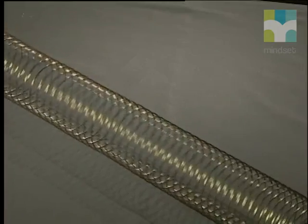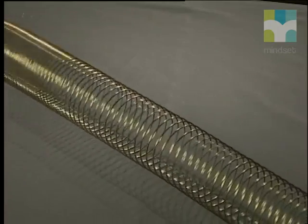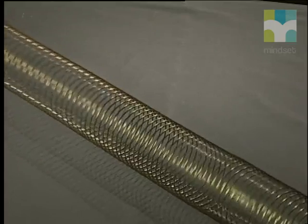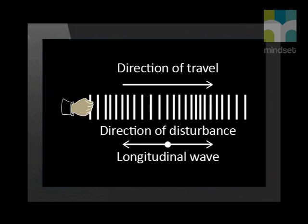The pushing and pulling on the spring disturbs it and creates a wave which runs along the spring. The direction of the disturbance and the direction of wave travel are parallel to each other. We call this type of wave, where the direction of disturbance is parallel to the direction of wave travel, a longitudinal wave.